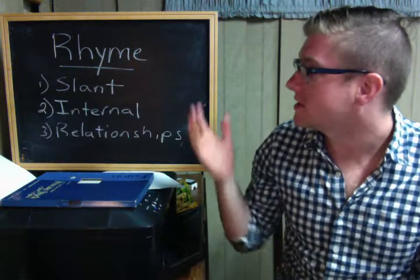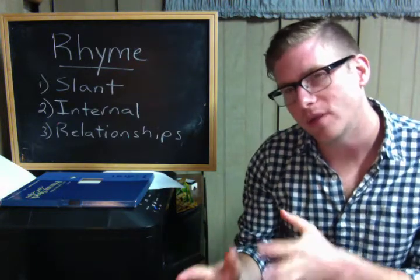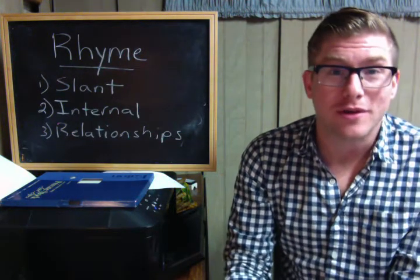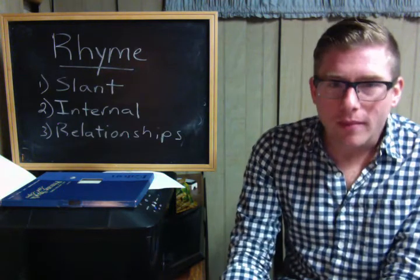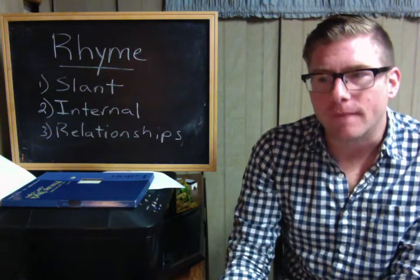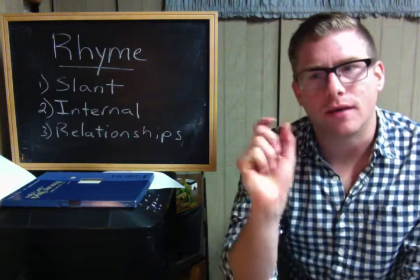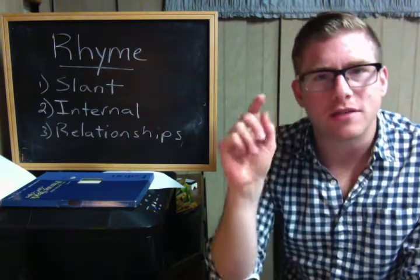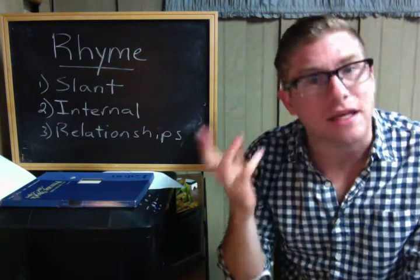Let's start with slant rhyme. Emily Dickinson said, 'Tell the truth, but tell it slant,' and as she was in most things, she was correct about this. Slant rhyme is when the poet rhymes words that only sort of half-rhyme — that are a little bit off. Either the ending consonants will rhyme, or the vowel sound at the end of the word will rhyme, but not both the vowel and the consonant. And this is very easy to hear.